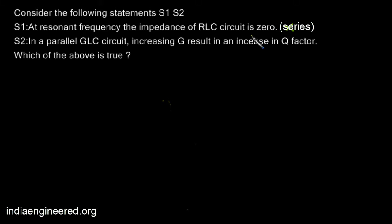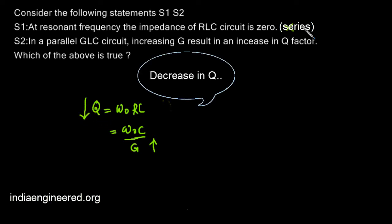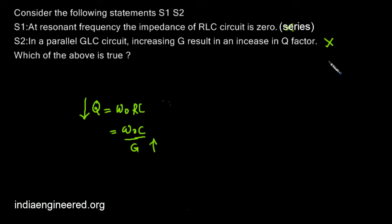The second statement is: in a parallel GLC circuit, increasing G results in an increase in Q factor. The equation for Q factor in a parallel GLC circuit is Q = ω₀RC, which equals ω₀C/G. Increasing G will therefore result in a decrease in Q, so the second statement is also wrong. The correct answer is: none of these are true.